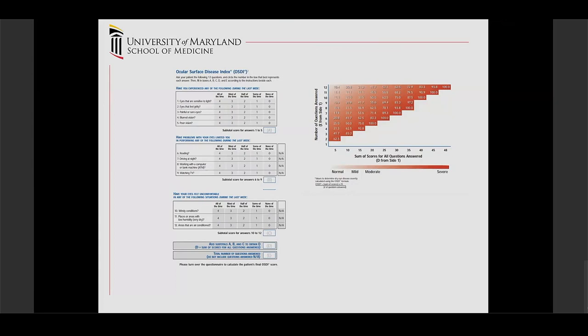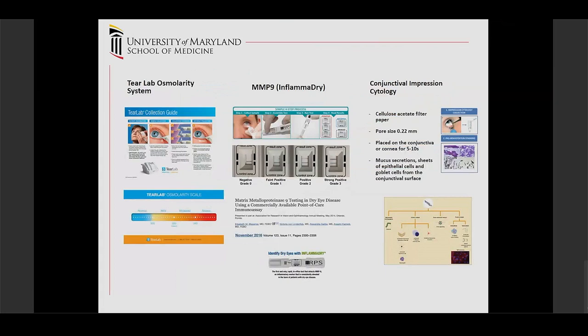Some less universally standard tests include tear lab osmolarity — important because it's part of the definition of dry eye, though not required to make the diagnosis. MMP-9 (Inflammadry) is a point-of-care test that tells us if there's inflammation on the ocular surface — one of my personal favorites. Conjunctival impression cytology is used more for research and hasn't found a clear clinical role yet.